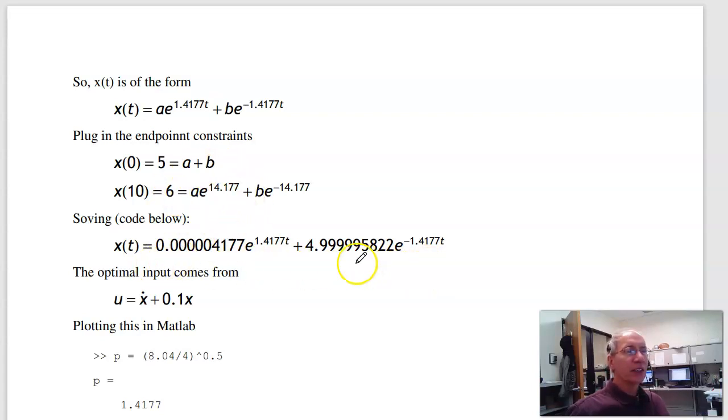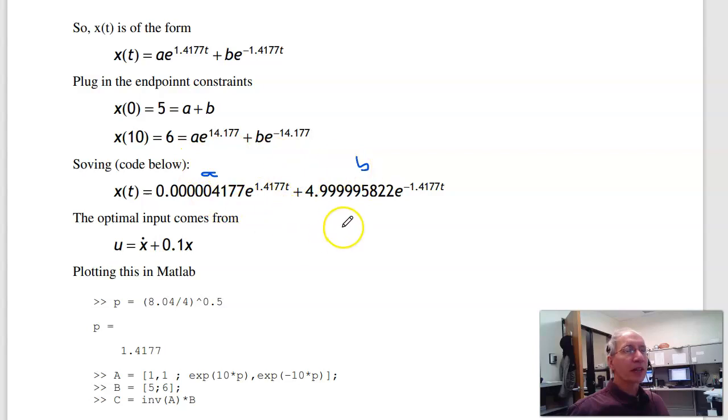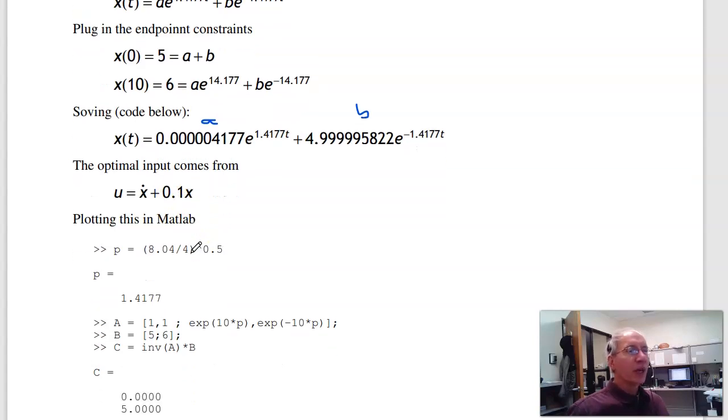And I get x(t). Find a and b. Here's a, there's b. So that's your optimal path. Once I know x(t), I can find u(t). u(t) is just x_dot + 0.1x. That's the dynamics. And that's the optimal input.